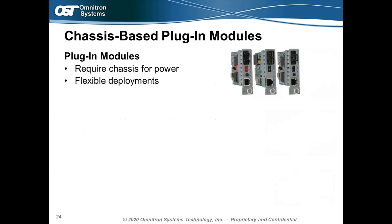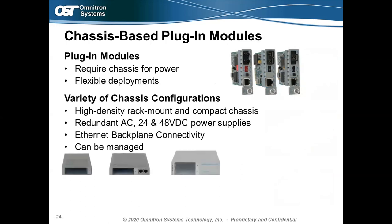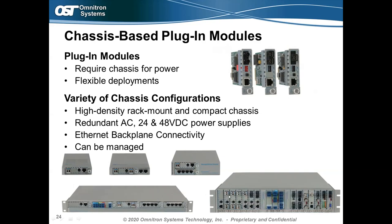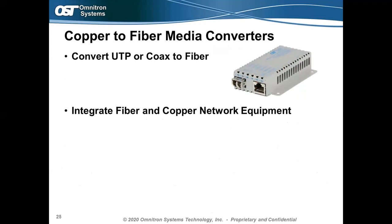Chassis-based plug-in modules are another form factor — great because you can redeploy them in various areas of your network. Omnitron offers single-slot, dual-slot, five-slot, and 19-slot chassis, powered by AC or DC. Multi-slot chassis have an Ethernet backplane for data sharing and management. The same plug-in card can be redeployed as the network grows. Omnitron also has an industrial-rated chassis that withstands harsh environments from negative 40 to 75°C — suitable for factory floors or outdoor roadside installations.